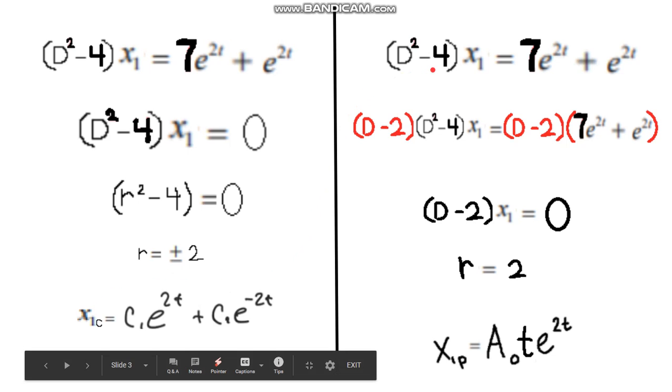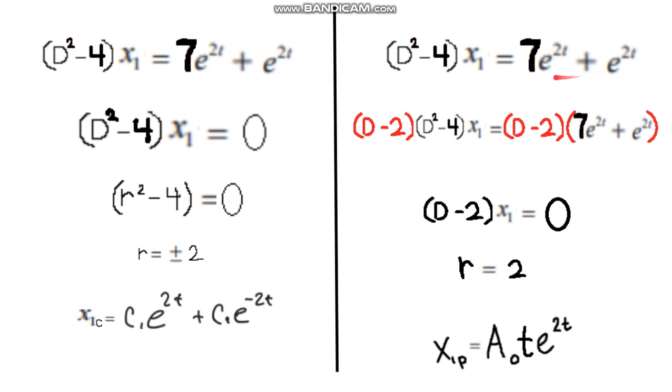And now, we have our particular solution where we leave this part on. And now, we have to find something that annihilates these. So it's going to be (D-2). So quick example, we're going to distribute this. The derivative of 7e^(2t) is going to be 14e^(2t) minus 2 times 7e^(2t), which is 14e^(2t). And those will cancel out.